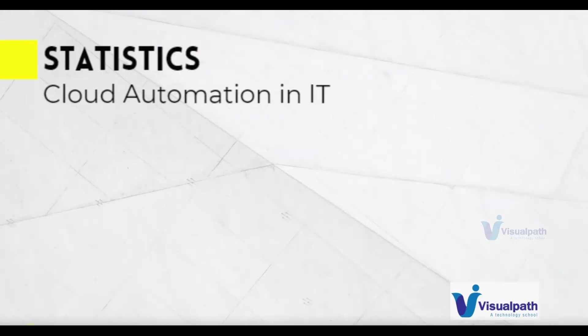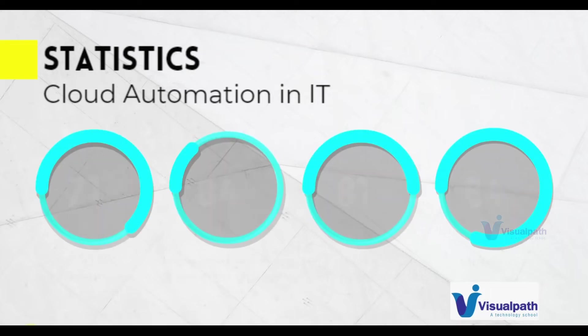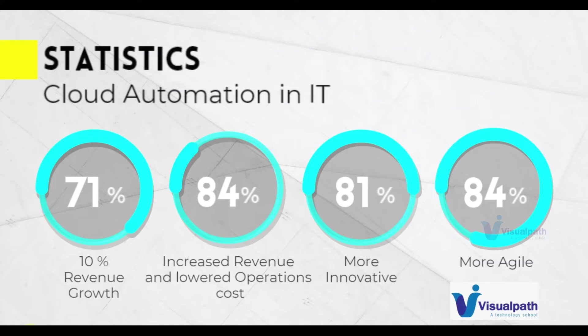Cloud automation adds a lot of business value. Here are some statistics: 71% of companies say they have seen 10% revenue growth, 84% have lowered their operations cost, and 81% have become more innovative. When you automate infrastructure you save a lot of time — you can invest that time in learning and adapting new technologies, which adds more business value. 84% have become more agile, deploying changes quickly as per requirements. Infrastructure has really become code now.